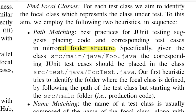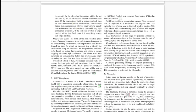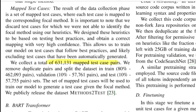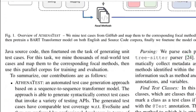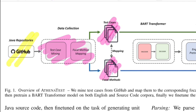They write parsers to identify relevant segments from the GitHub paths. For example, each test case should have the '@Test' annotation before it starts. Using these markers and heuristics based on JUnit best practices, they extract test case and focal method pairs. They then split the data into 80% training, 10% validation, and 10% testing sets.